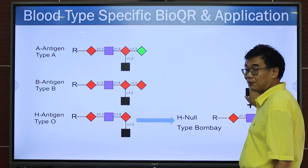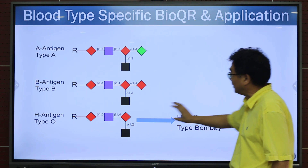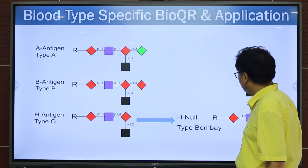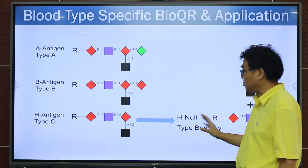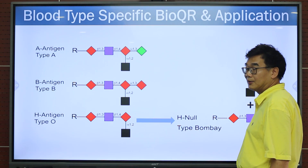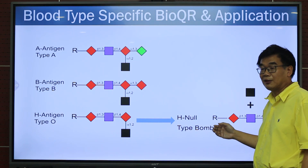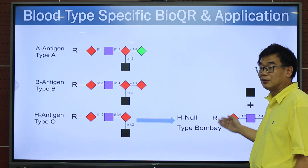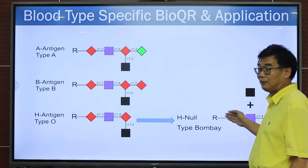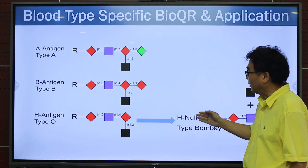Because they don't have this fucose, there are antibodies in their blood against the type-specific bio-QRs. So they cannot receive blood transfusion from ABO groups because they have antibodies against them. For this group of people, they face a medical challenge: if they need surgery, they can only receive blood from this same group and cannot receive from the other groups.